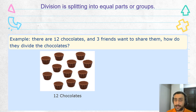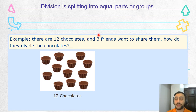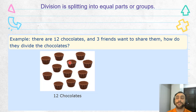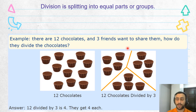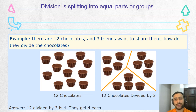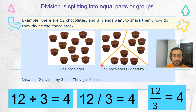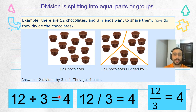As you remember this example: you have 12 chocolates and three friends want to share them, right? So what do we do? We have to divide it into three groups. How many in each group? Four chocolates. So 12 divided by three equals four. Pretty easy, right?